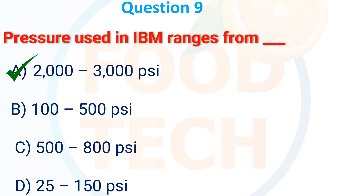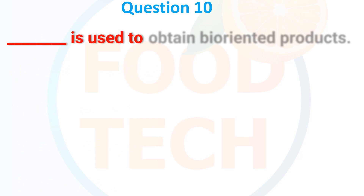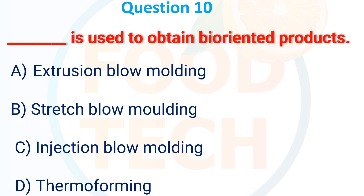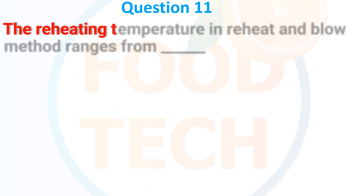Dash is used to obtain biaxially oriented products. (a) Extrusion blow molding, (b) Stretch blow molding, (c) Injection blow molding, (d) Thermoforming. The answer is (b) Stretch blow molding.